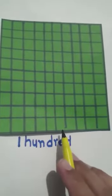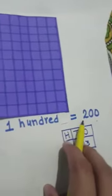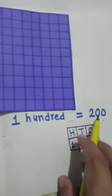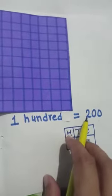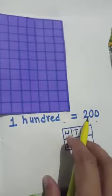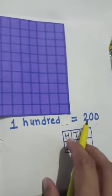Now there is one hundred and one hundred. One hundred and one hundred equals two hundred.